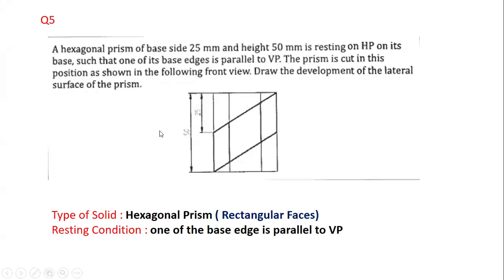In order to do the solution, the data required are the type of solid. Here the type of solid is hexagonal prism. Remember, for a prism when we cut and unfold it, we are going to see rectangular faces. In order to construct the top view, we need the resting condition. The resting condition is: one of the base edges is parallel to VP.